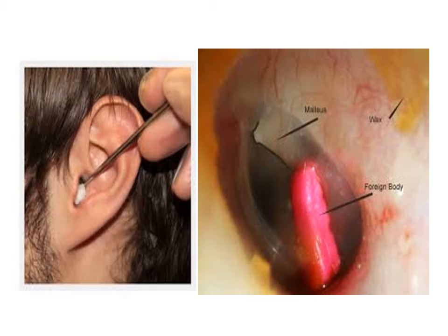For living foreign bodies, remember: do not attempt to remove a crawling or flying insect while it is alive. First, kill it. Kill it by instilling oil if at home, or spirit or chloroform water. In the casualty, we instill 4% xylocaine into the ear. After killing it, you can comfortably remove by forceps, syringing, suction, or under microscope.